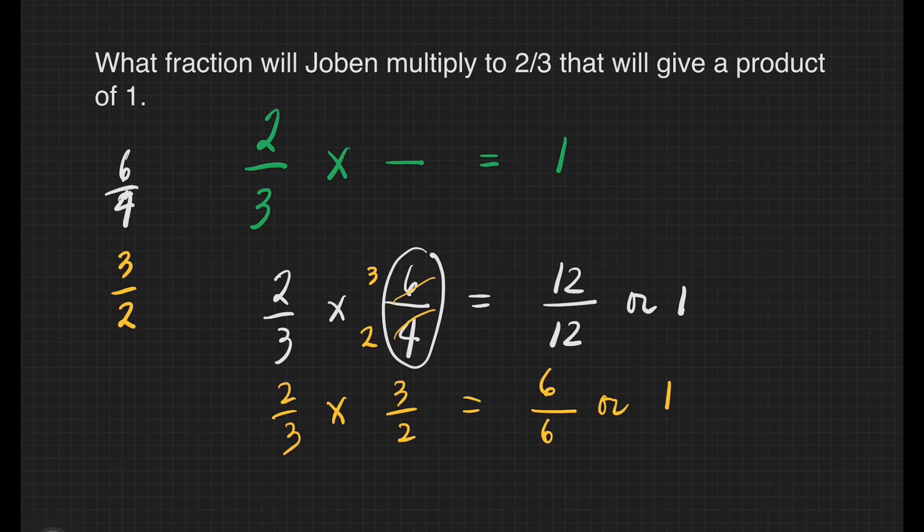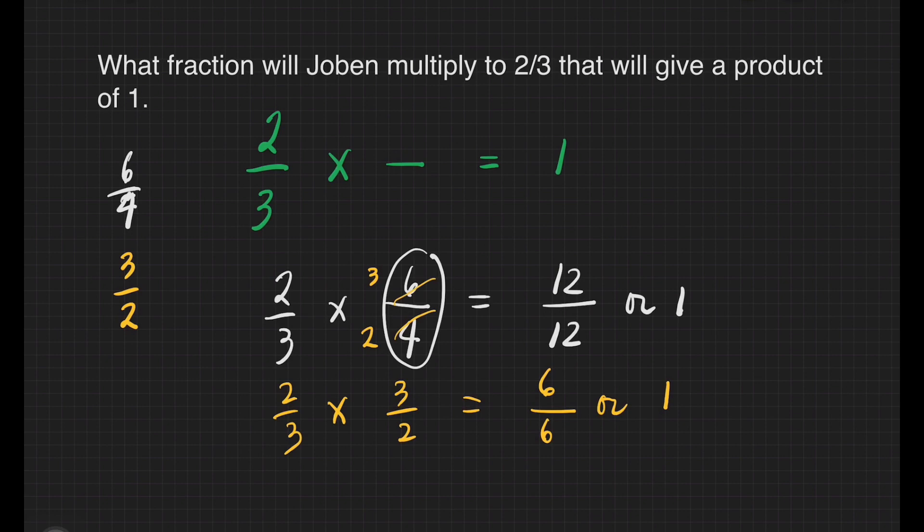We'll get the lowest term because 3/2 is equal to 6/4. So for this problem, our answer will be 3/2. When you multiply 2/3 and 3/2, that will give you a product of 1.